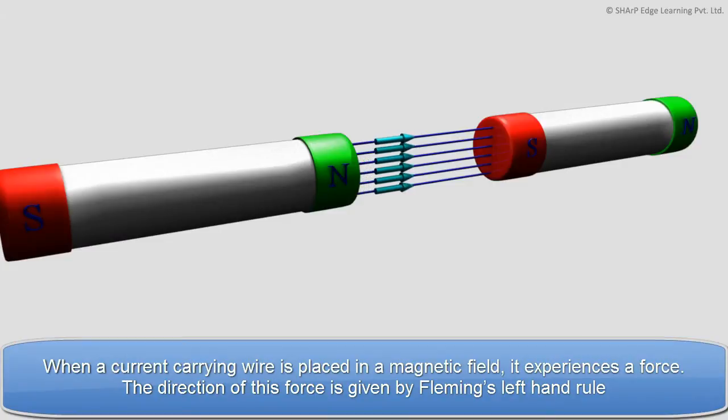When a current carrying wire is placed in a magnetic field, it experiences a force. The direction of this force is given by Fleming's left hand rule.